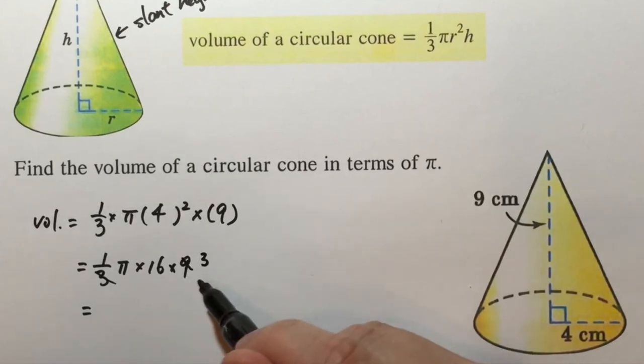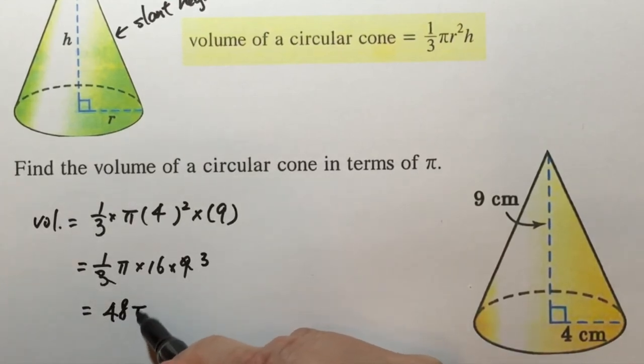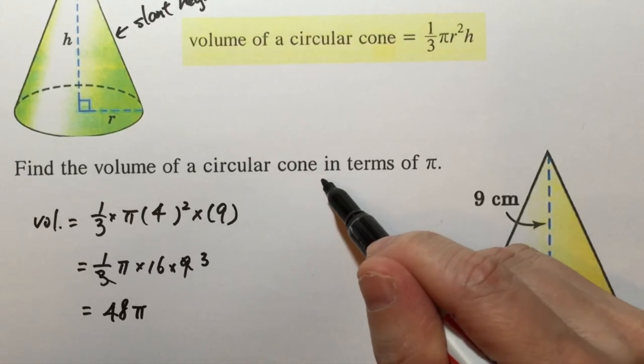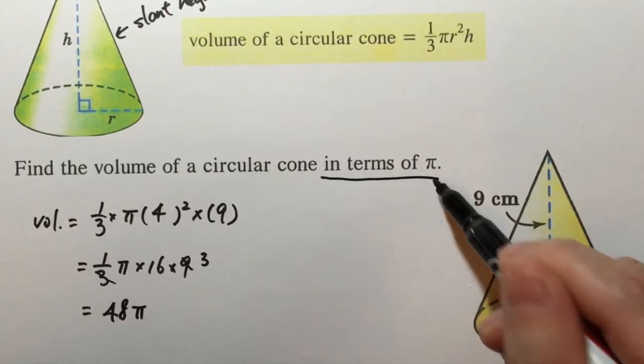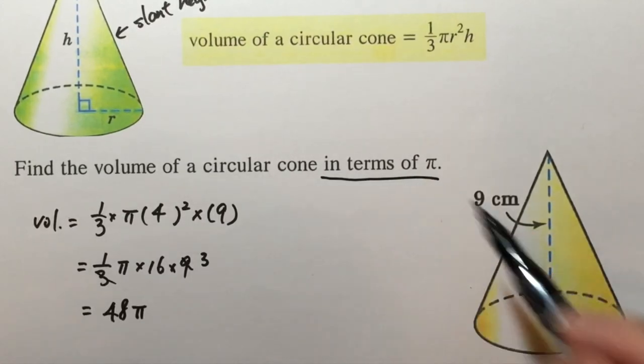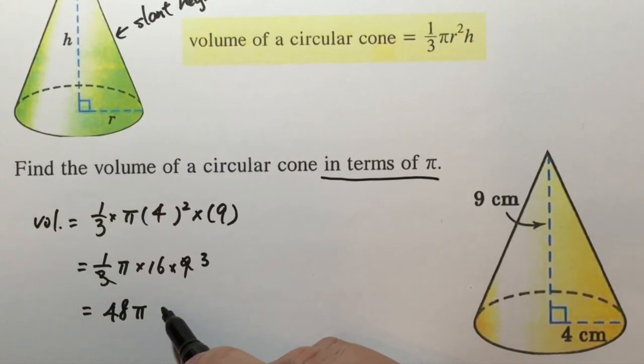We cancel this part and therefore 48 pi. Don't forget we have to read the question carefully. Express the answer in terms of pi and with a unit here. So this is cm cubed.